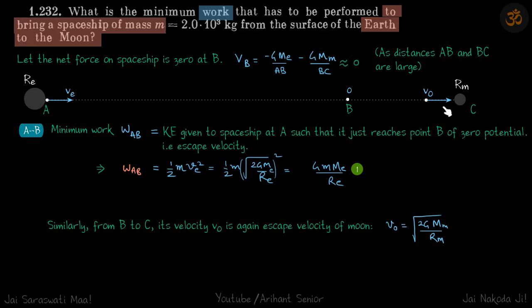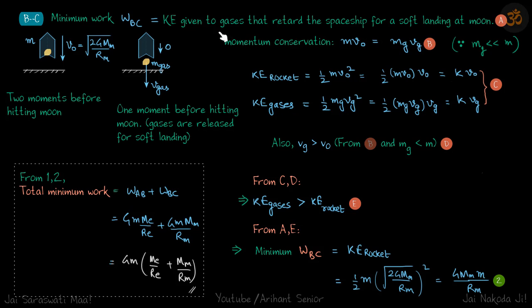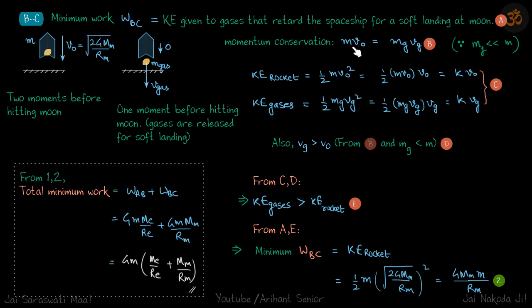The total work for B to C is the kinetic energy given to the gases that retard the spaceship for a soft landing at the Moon. Using momentum conservation: initial momentum is m·v₀, and final momentum is m_gas·v_gas (since spacecraft velocity is zero). So m·v₀ = m_gas·v_gas. We need the kinetic energy of the gases, which is (1/2)·m_gas·v_gas², but we don't know m_gas or v_gas individually — however we have this momentum relation.